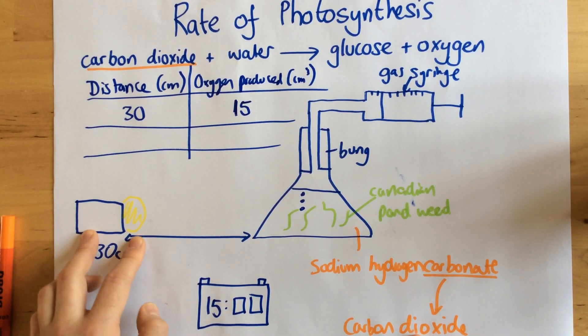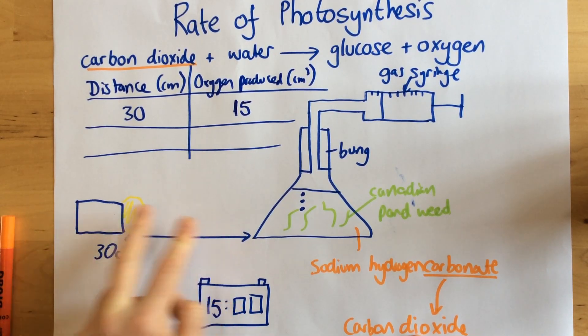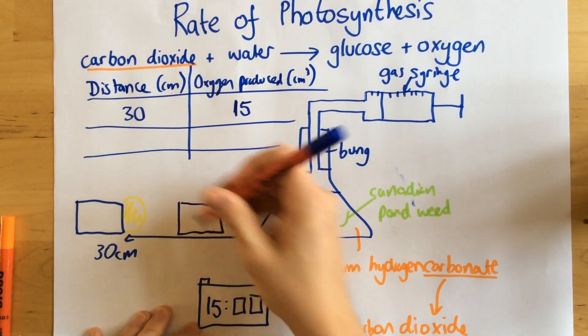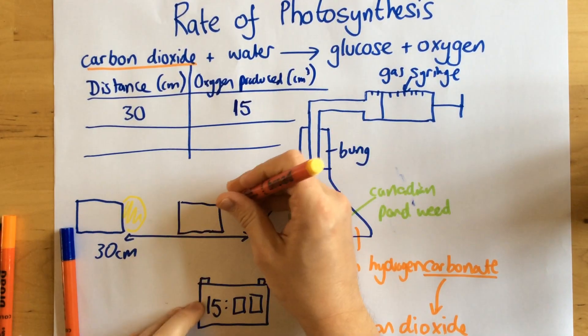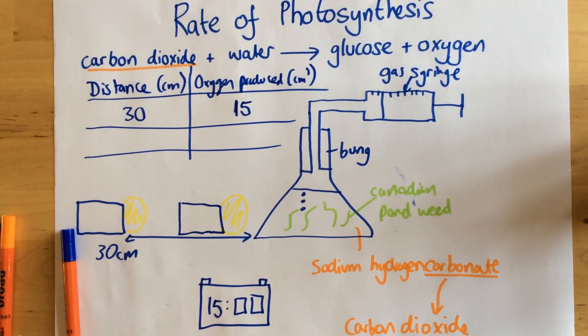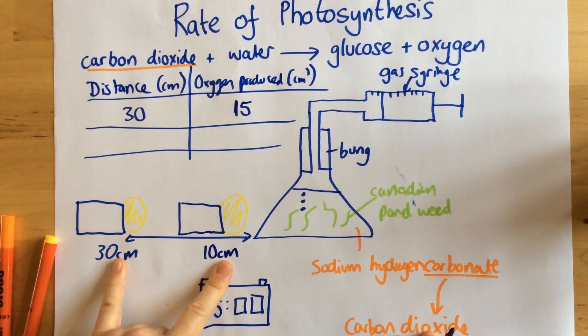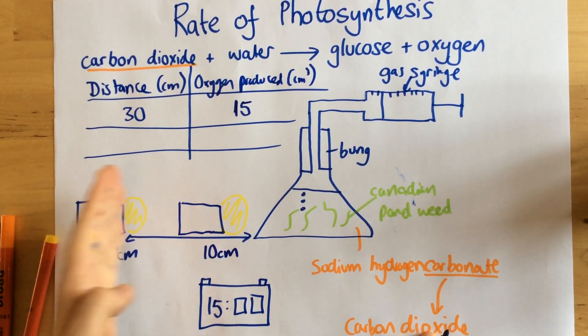The thing that we have to do next is we have to change the distance of the light. So we're going to move the light closer for our second one. So let's say we put the light here. This time let's say it's only 10 centimeters away. Now when you do this, you do several different values for the distance of the light.